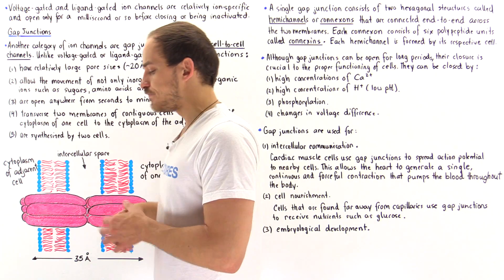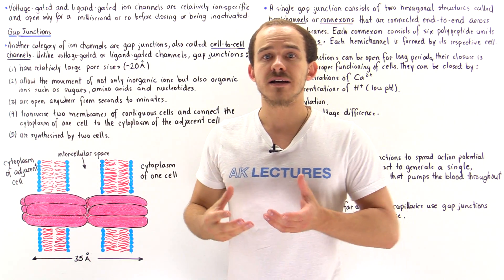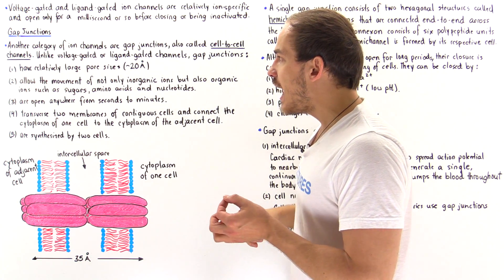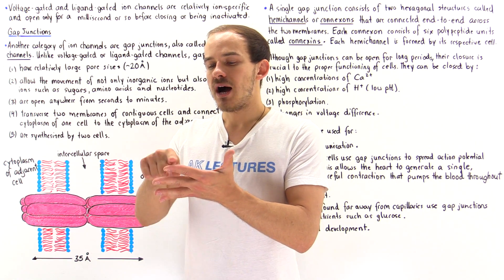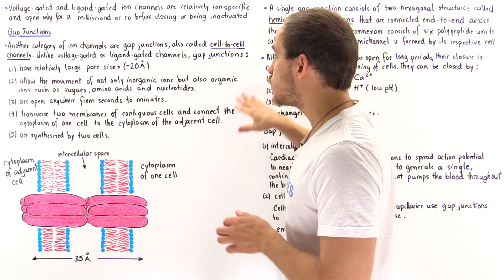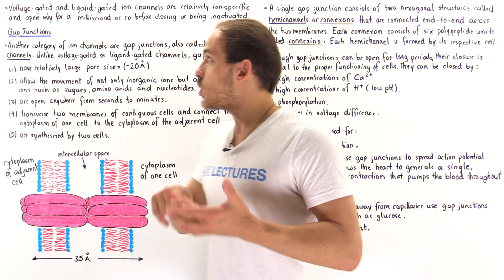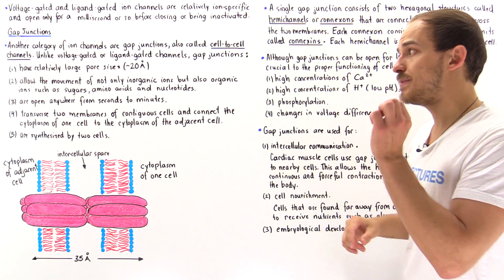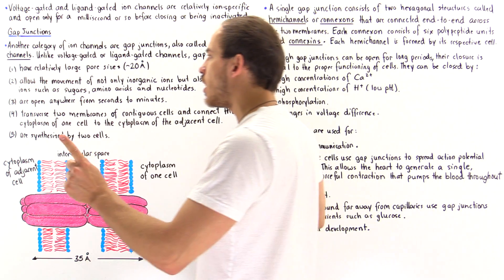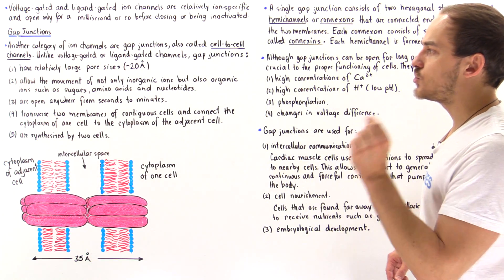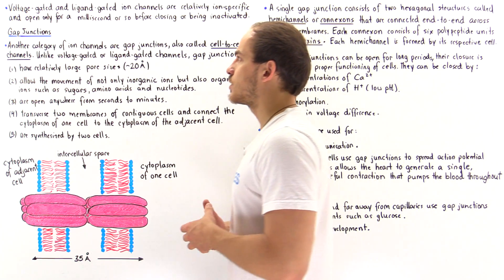Unlike voltage-gated and ligand-gated ion channels, gap junctions have relatively large pore sizes — the diameter is about 20 angstroms. They allow the movement of not only inorganic ions such as calcium, sodium, potassium, and chloride, but also organic substances such as glucose molecules, amino acids, and nucleotides. So gap junctions are nonspecific — they allow any molecule or ion to move across as long as it's not too large. Large substances such as proteins, polynucleotides, and polysaccharides cannot pass through.